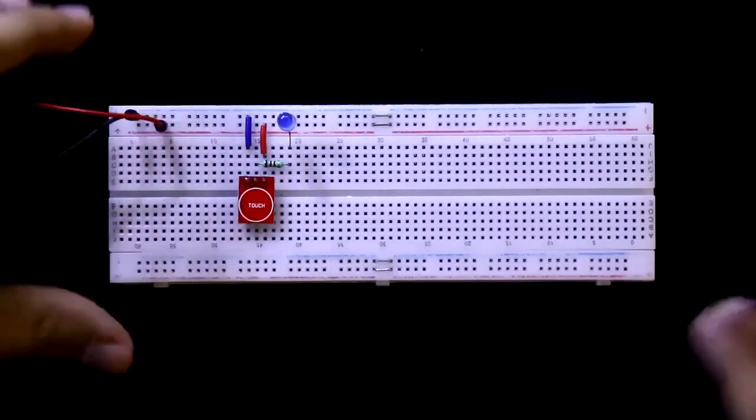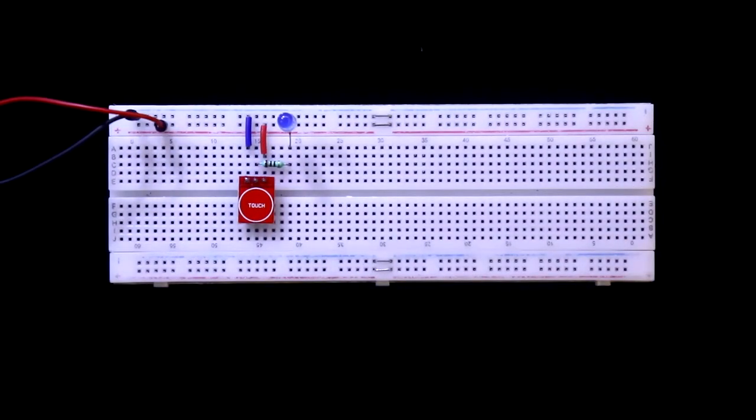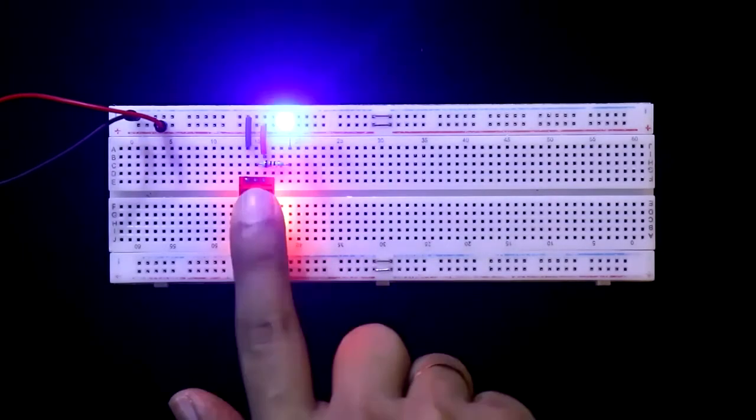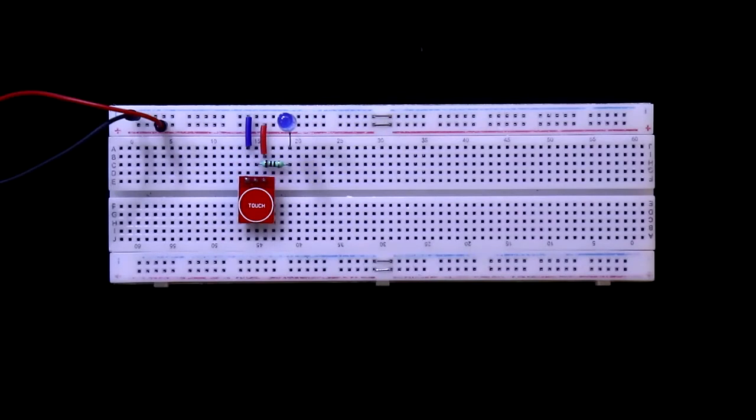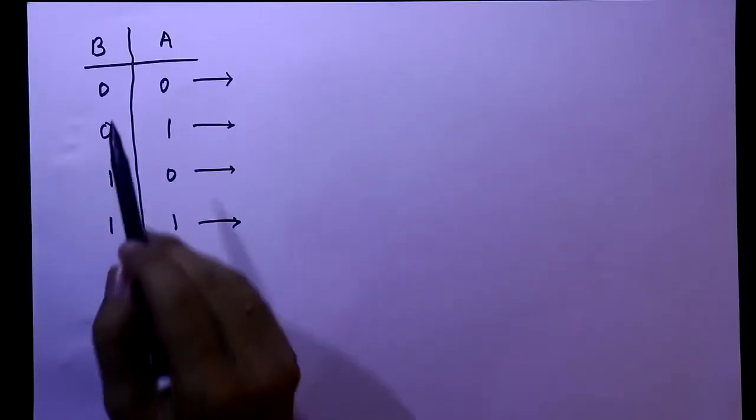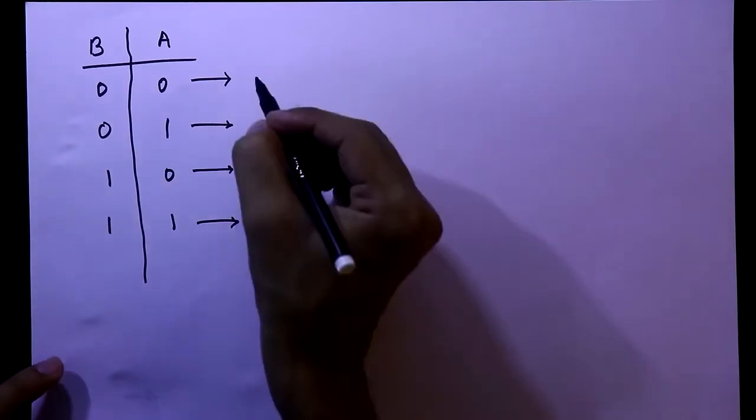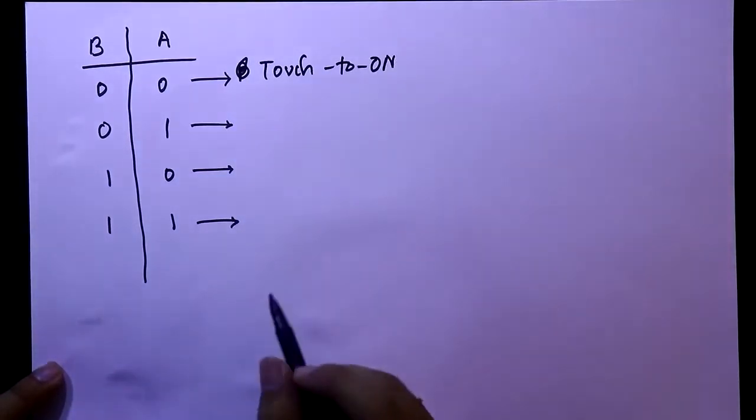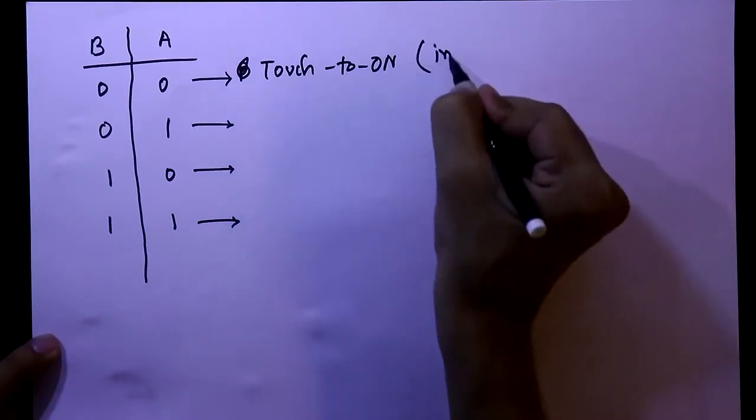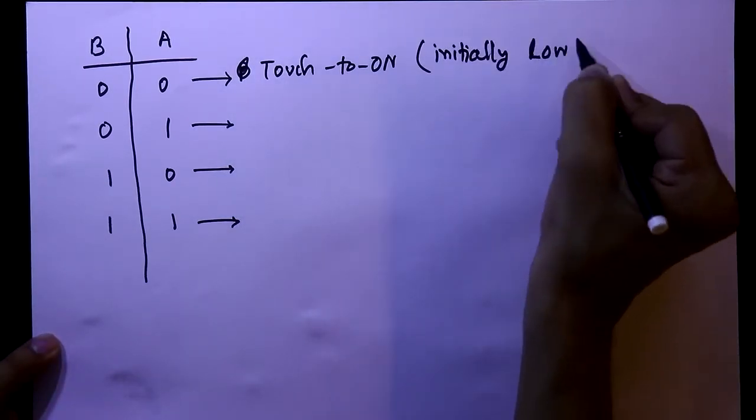Now connect the power supply. Here is the negative and here is the positive. Initially the output is 0, and if I touch it then it is 1 or on. So this touch module is working like a push-to-on switch or push button switch. If the condition is 0,0 then the working mode is touch-to-on and its initial condition was low, initially low.